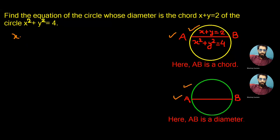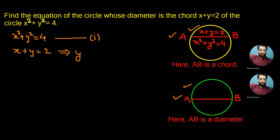We have the equation of the circle as x² + y² = 4. Let's represent this as equation number 1. We have the equation of the chord as x + y = 2, which can be written as y = 2 − x, representing this as equation number 2.